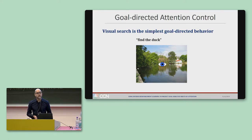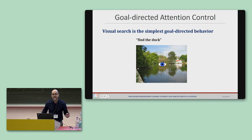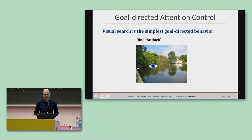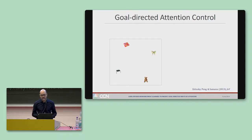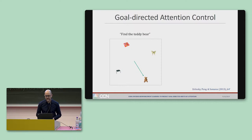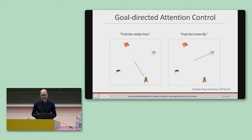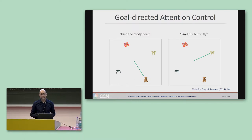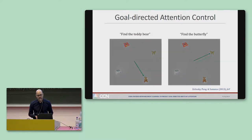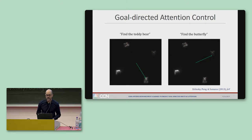Our lab studies visual search, which is arguably the simplest and therefore best goal-directed behavior to try to figure out. There's a target goal and you're trying to find it. If you show someone an object array and ask them to find the teddy bear, you get very different behavior than if you ask them to find the butterfly. And in neither case will they prefer to look at the footstool, even though it's the most visually salient object.